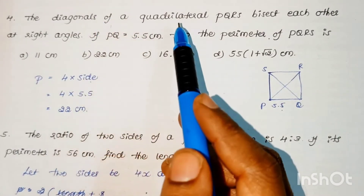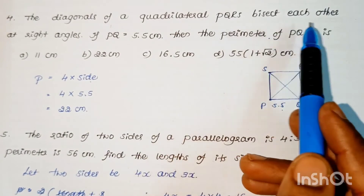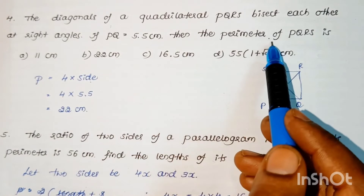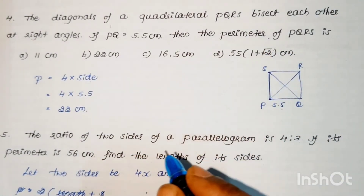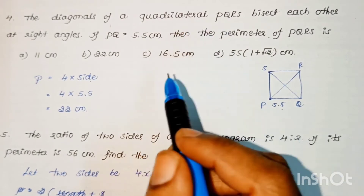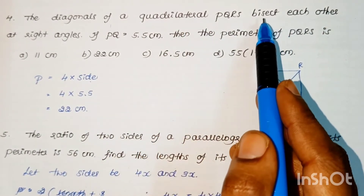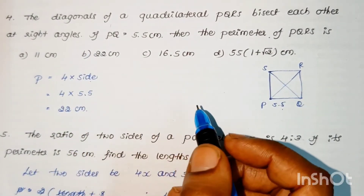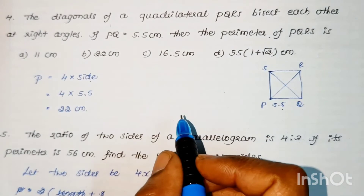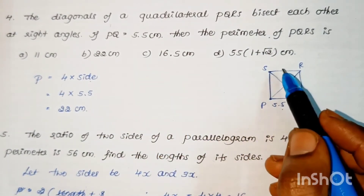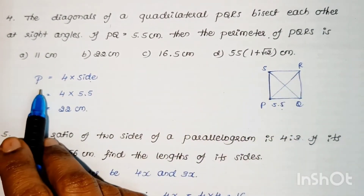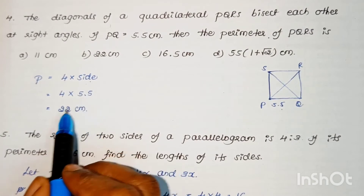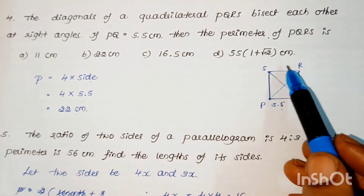Problem: The diagonals of quadrilateral PQRS bisect each other at right angles. If PQ = 5.5 cm, find the perimeter of PQRS. Since the diagonals bisect each other at right angles, the quadrilateral is either a square or a rhombus, both of which have all sides equal. Therefore perimeter = 4 × side = 4 × 5.5 = 22 centimeters.